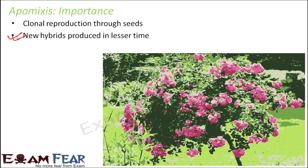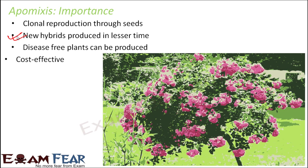Disease-free plants can be produced through apomixis because you are making exact clones, so there will be no genetic variations or changes. It is also a cost-effective method — creating new hybrids requires repeating the entire cross-breeding process each time, involving both time and money. Apomixis allows you to quickly produce clones of a new hybrid in a cost-effective way.